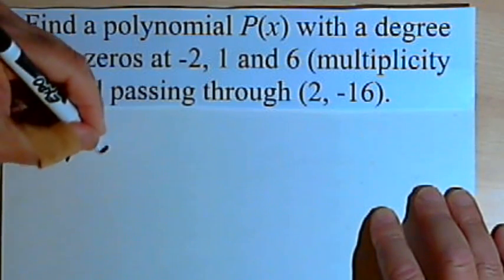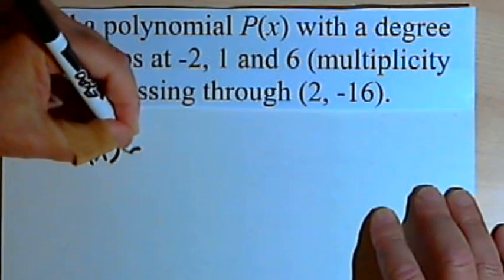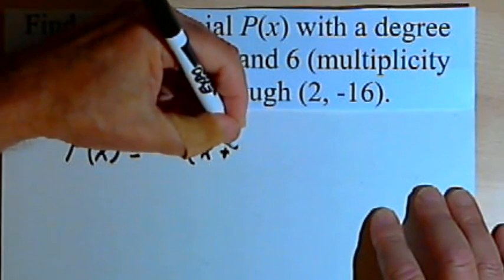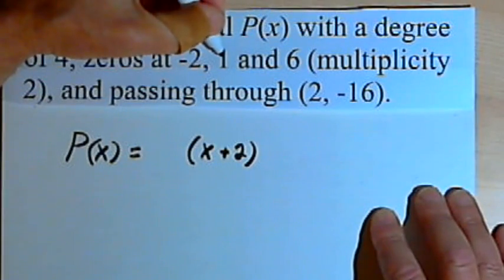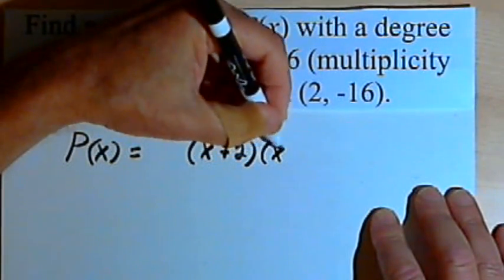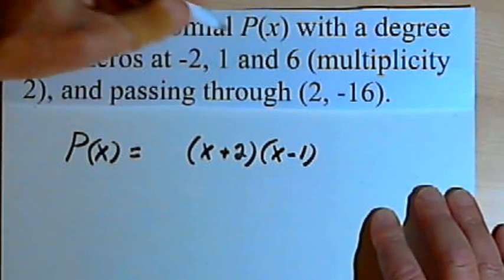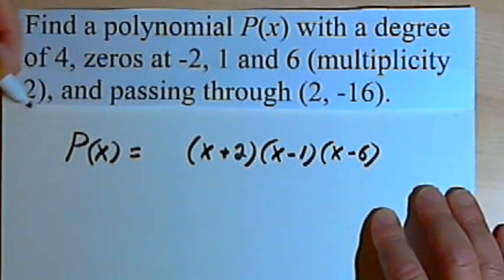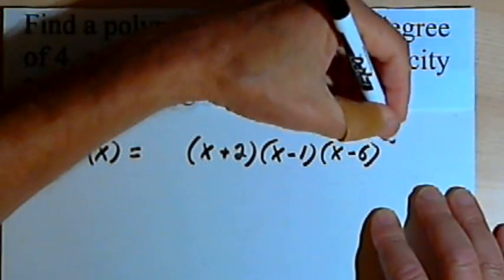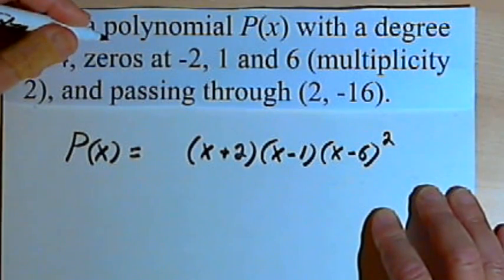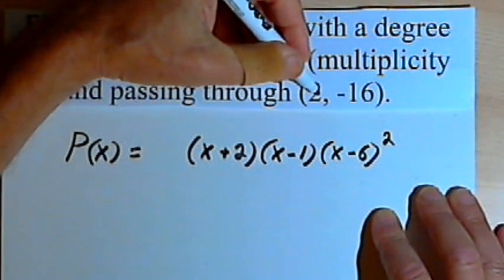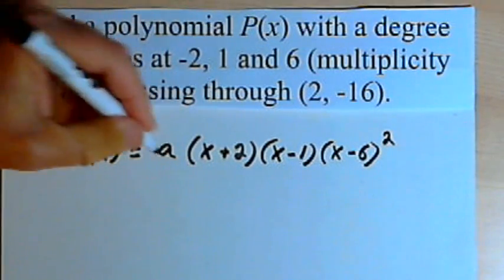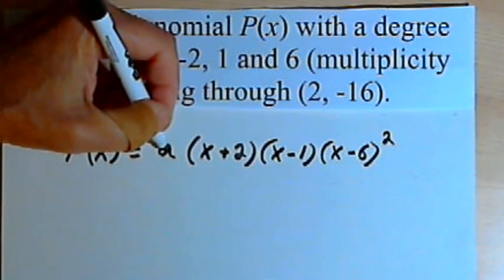So I want P(x) equals... I've got a zero at negative 2, so one of the factors is going to be x plus 2. I've got a zero at 1, so there's going to be x minus 1 as a factor, and a zero at 6, so x minus 6 is a factor. But that has a multiplicity of 2, so I want (x minus 6) squared. And I'm given this point (2, -16), so let's put an a in front of these three factors and find out what the constant is going to be.